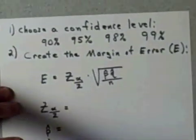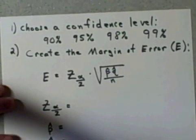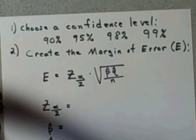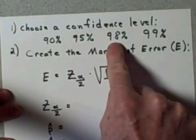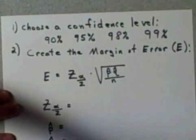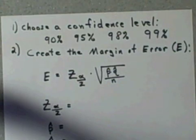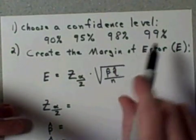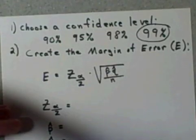It's basically a two-step process. Number one, we have to choose our confidence level. 90%, 95%, 98%, 99% are typically the ones that are used. What would be appropriate here? Well, I've decided we want to be at the highest level of confidence, so we want to be at the 99% confidence level.